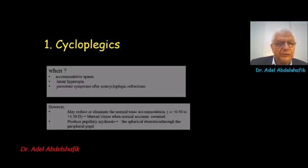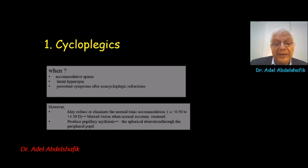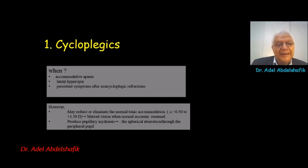Cycloplegics are used if there is accommodative spasm, latent hyperopia, or persistent symptoms after non-cycloplegic refraction. Keep in mind that cycloplegics may reduce or eliminate accommodation in the range of half to one and a half diopters, so this may result in blurred vision when normal accommodation is resumed.